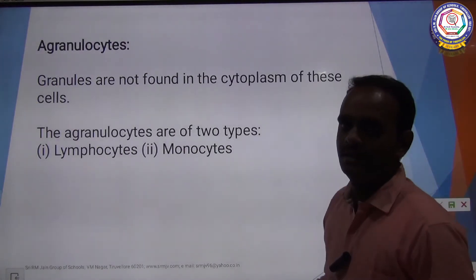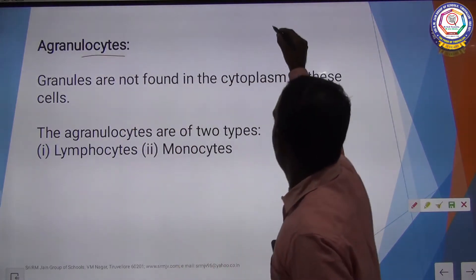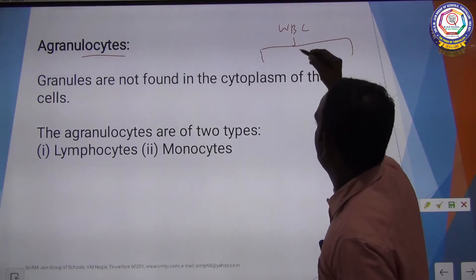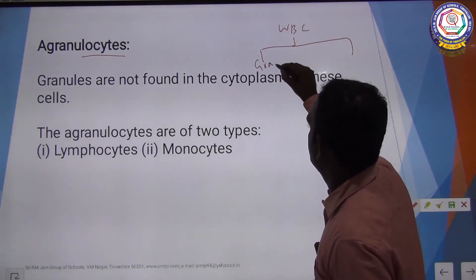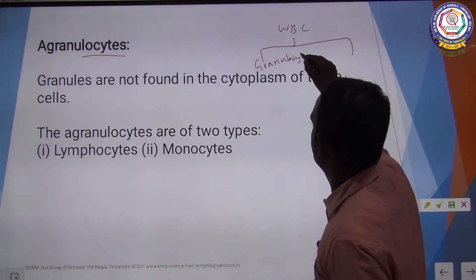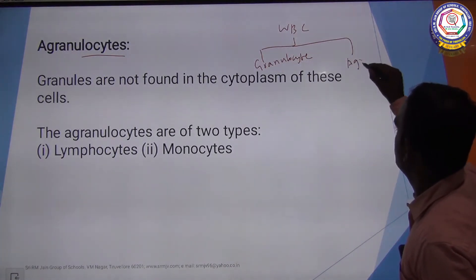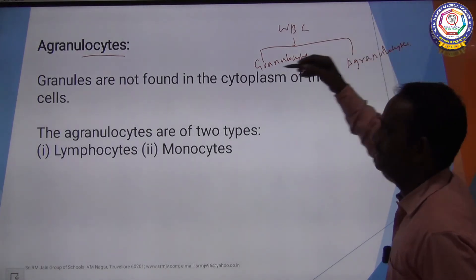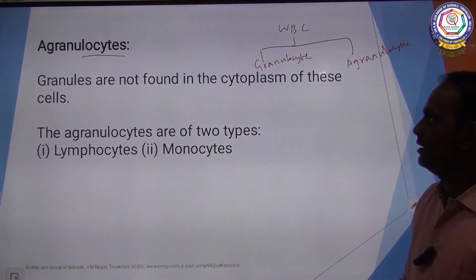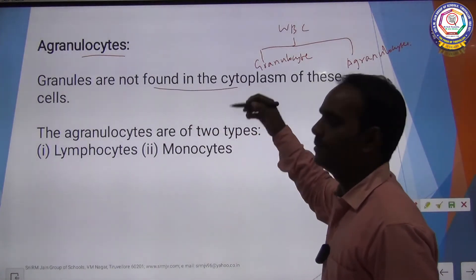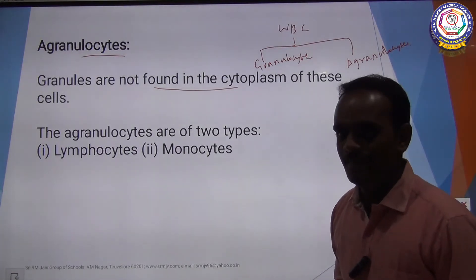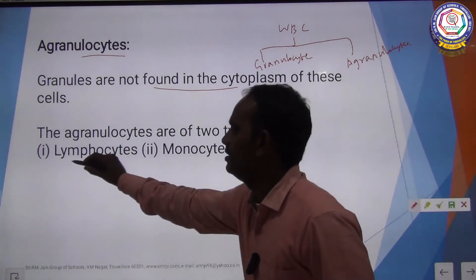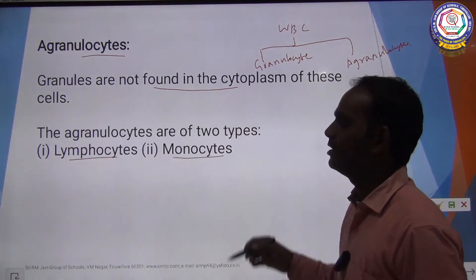The next category of WBC is agranulocytes. In agranulocytes, granules are not found in the cytoplasm. Agranulocytes are further divided into two types: one is called lymphocyte and another one is called monocyte.